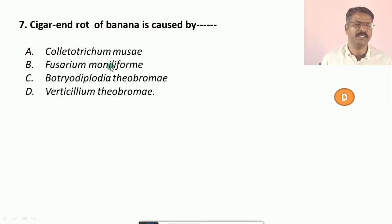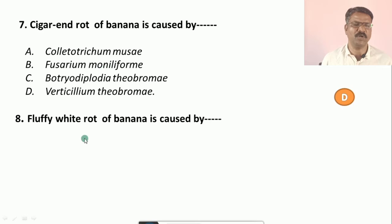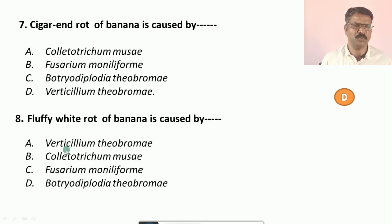Question number eight: Fluffy white rot of banana is caused by — options are: a) Verticillium theobromae, b) Colletotrichum gloeosporioides, c) Fusarium moniliforme, d) Botryodiplodia theobromae. The correct option is c, that is Fusarium moniliforme.